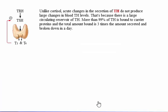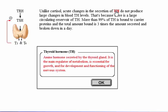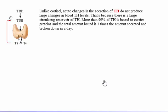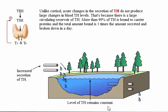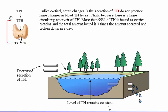Unlike cortisol, acute changes in the secretion of thyroid hormone do not produce large changes in blood thyroid hormone levels. That's because there is a large circulating reservoir of thyroid hormone — more than 99% is bound to carrier proteins, and the total amount bound is three times the amount secreted and broken down in a day.